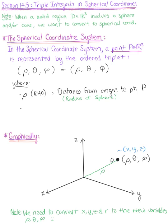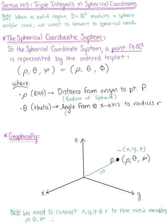Theta is the same angle from the positive x-axis to the radius as in polar coordinates. So we know theta is the angle from the positive x-axis to the radius R, the same as in polar coordinates.